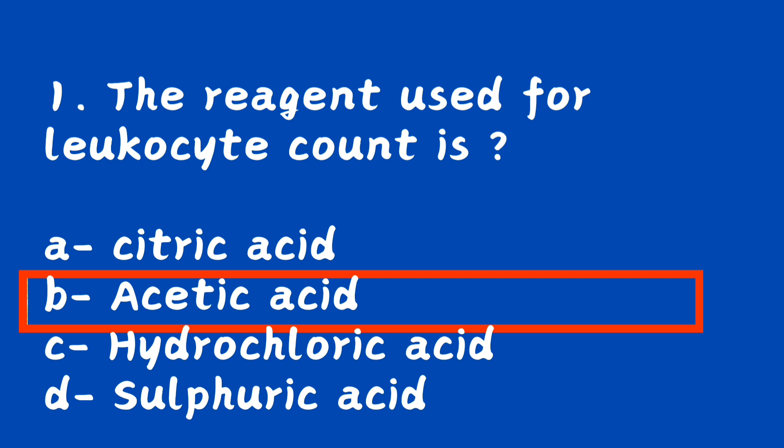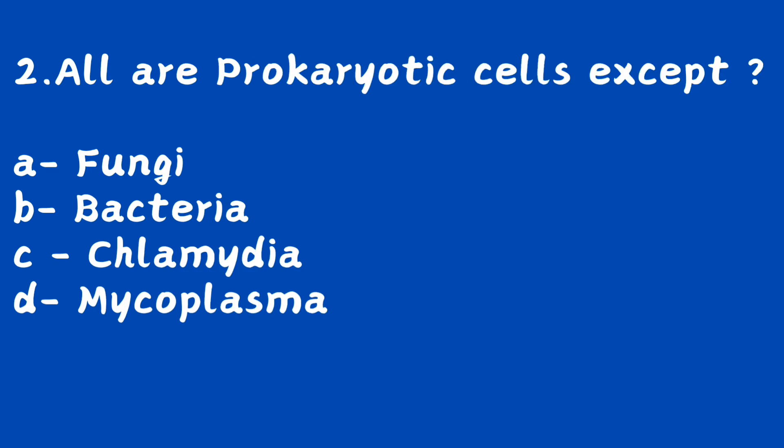The right answer is option B, acetic acid. Acetic acid is used in WBC diluting fluids to lyse RBCs.